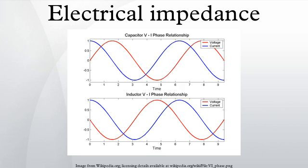However, the phases have opposite signs: in an inductor the current is lagging, while in a capacitor the current is leading. The inductor and capacitor impedance equations can be rewritten in polar form. The magnitude gives the change in voltage amplitude for a given current amplitude through the impedance, while the exponential factors give the phase relationship.